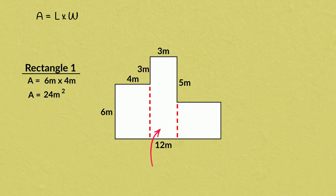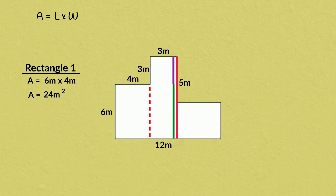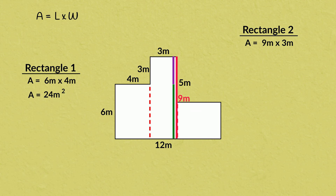Now on to this rectangle. I know the width is 3 meters, but I still need to work out the length. This line is 6 meters long and this line is 3 meters long. The total length of this rectangle must be 6 meters plus 3 meters, giving us a total of 9 meters. Now we can calculate length times width: 9 times 3 equals 27. The area of this rectangle is 27 meters squared.